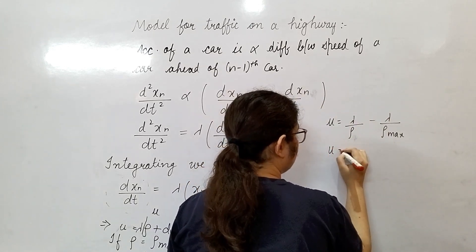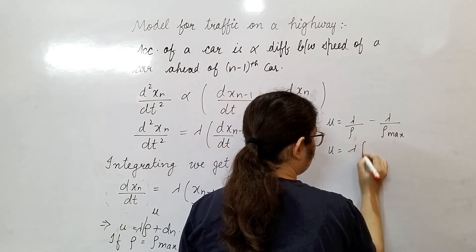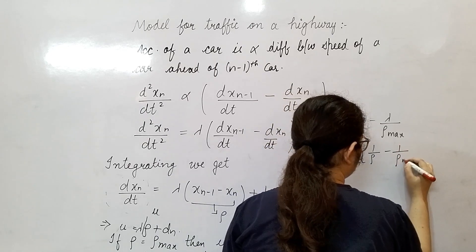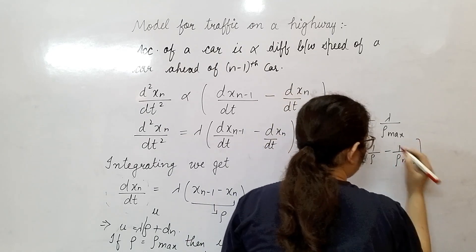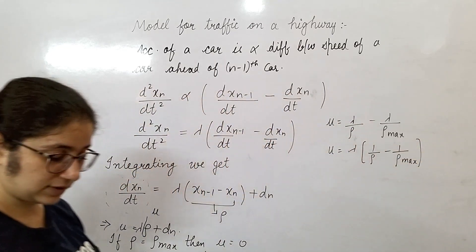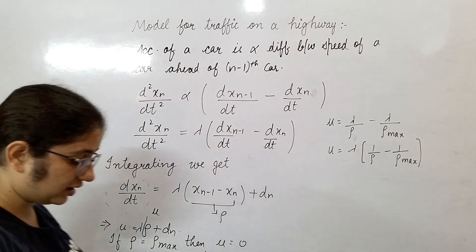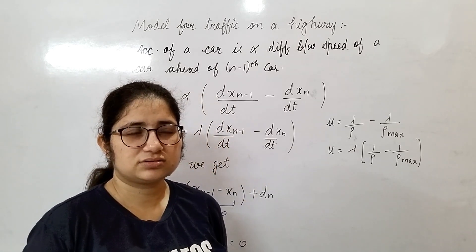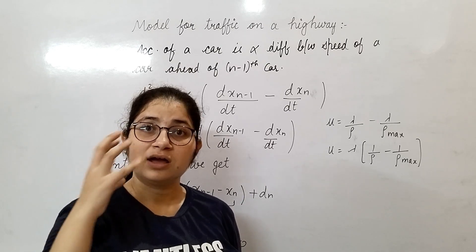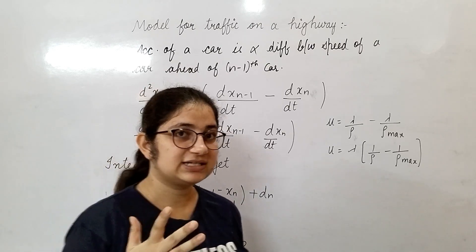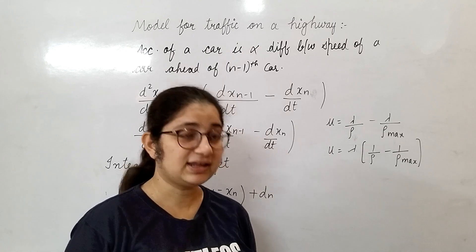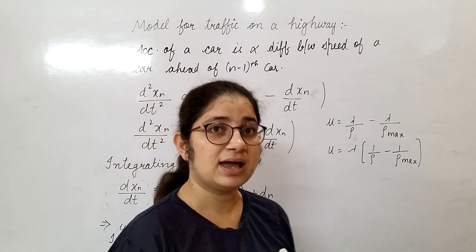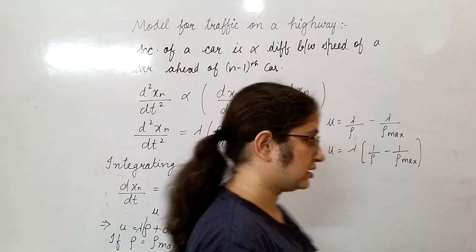That gives u equals lambda times (1 over rho minus 1 over rho_maximum). But in a practical situation on a highway — take care, you also observe that the maximum speed and minimum speed is mentioned there. On every highway they have mentioned what should be your minimum speed and what should be your maximum speed.